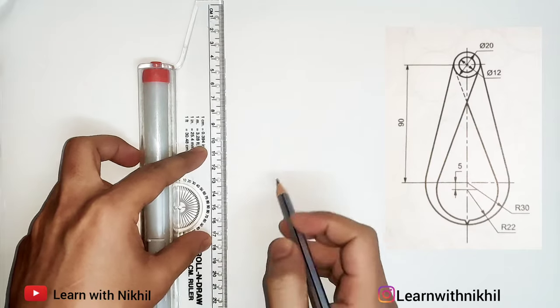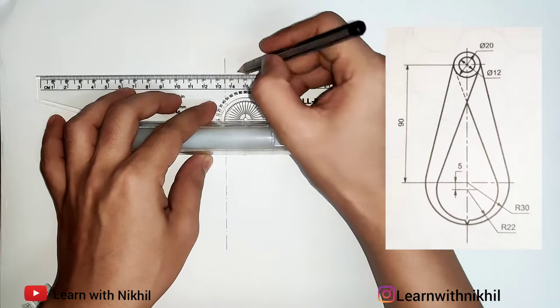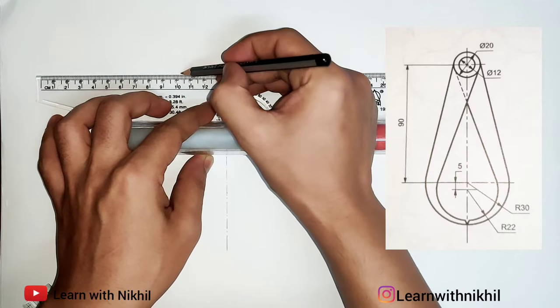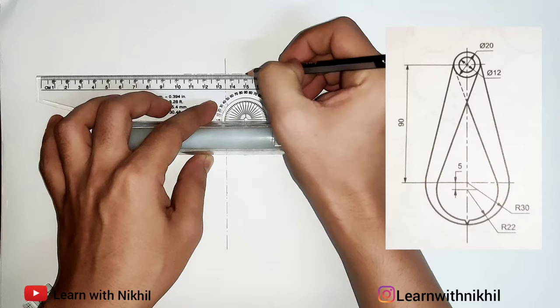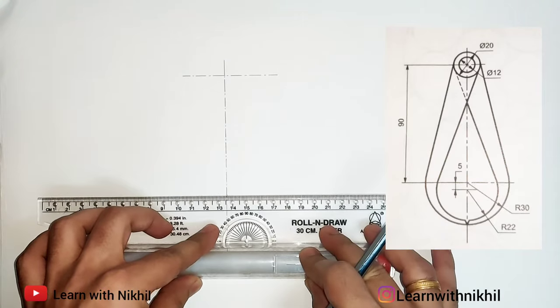Through the points we have marked earlier we'll draw a perpendicular line to this center line. And there also, as it's a circle, we will draw the same center axis line through these points.